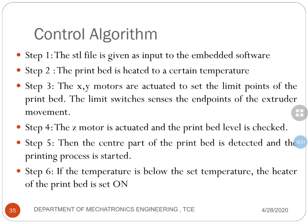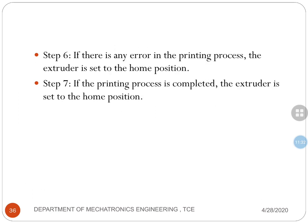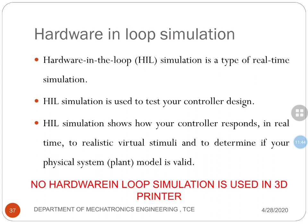This is the control algorithm. The STL file is given as input to the software. The print bed is heated to a certain temperature. Then the x-y-z motors are activated and the limit points are sensed. The z-axis motor is activated and the print bed level is checked. The proximity sensor works and determines the closeness of the print bed. Then the center part of the print bed is detected and the printing process is started. If the temperature is below the set temperature, the heater of the print bed is set on. If there is any error in the print process, it has to go to the home position. If the printing process is completed, then the extruder is set to the home position.